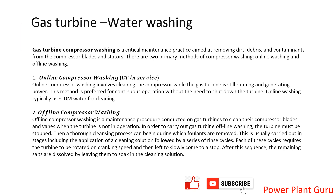Offline water wash means you have to take the machine offline from the grid — that means shutting it down. There are specific criteria: the wheel space temperature must be below a certain value before you can start washing. You shut the machine down, keep it for some time so it cools, and then start the washing cycle, which involves many steps.